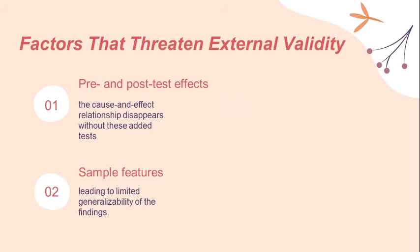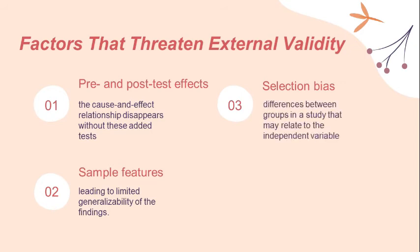The next is selection bias, also considered a threat to internal validity. Selection bias describes the differences between groups in a study that may be related to the independent variable — such as motivational differences, willingness to take part in a study, or specific demographics of individuals being more likely to participate in an online survey.